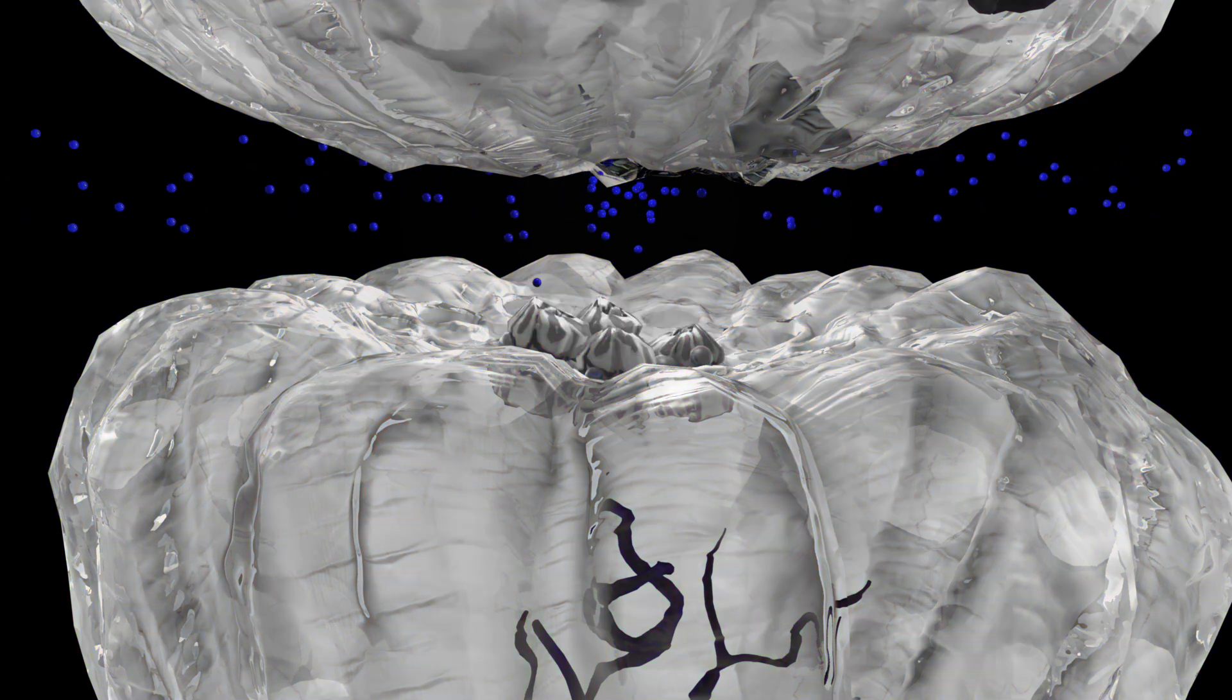This is chloride. This negatively charged ion stops the electrical signal.